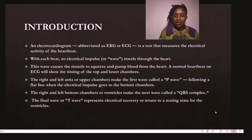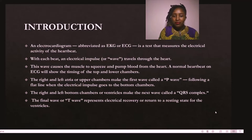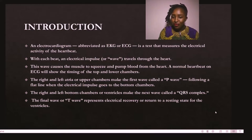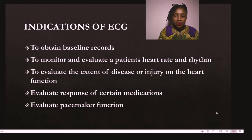An ECG is a test that measures the electrical activity of the heartbeat. With each beat, an electrical impulse or wave travels through the heart. This wave causes the muscle to squeeze and pump blood out from the heart chambers. A normal heartbeat on ECG will show the timing of the top and lower chambers. The right and left atria make the first wave called a P wave, followed by a flat line. The electrical impulse then goes to the ventricles, which make the next wave called a QRS. The final wave, the T wave, represents recovery or return to resting state for the ventricles.